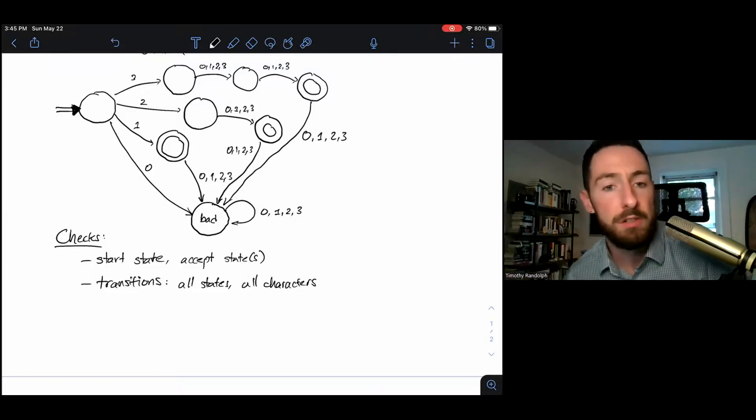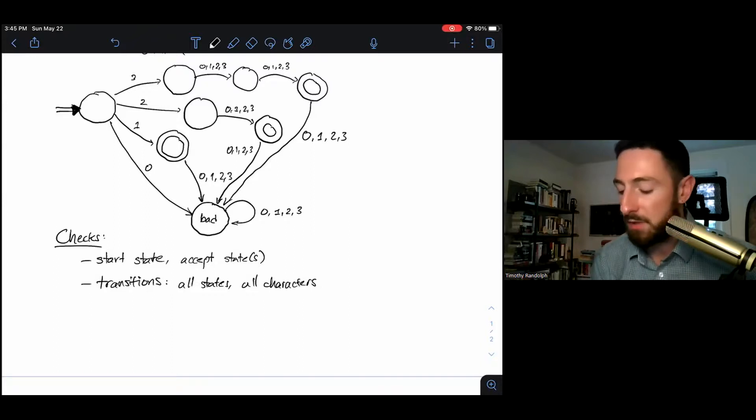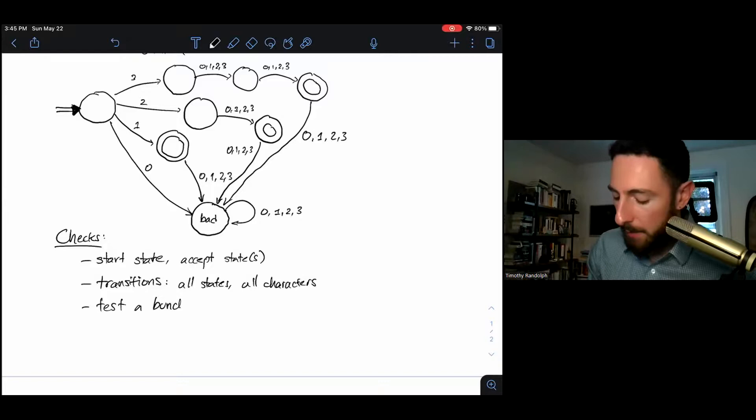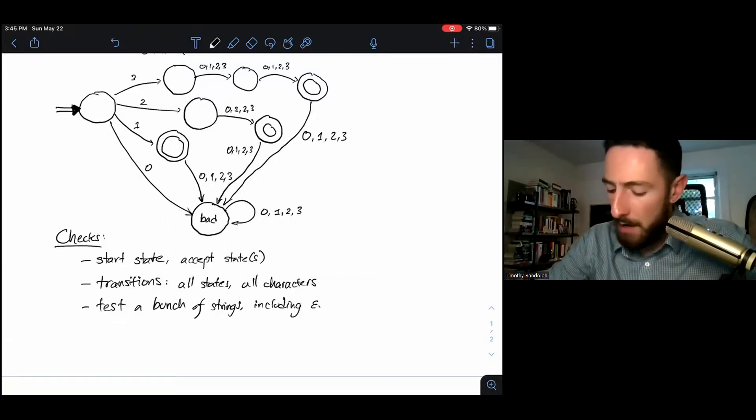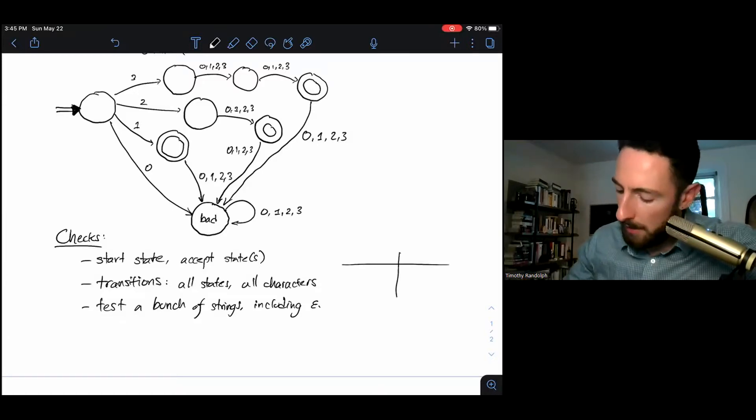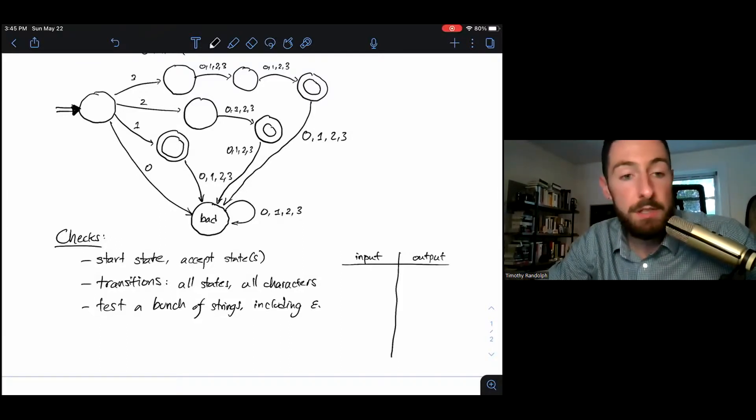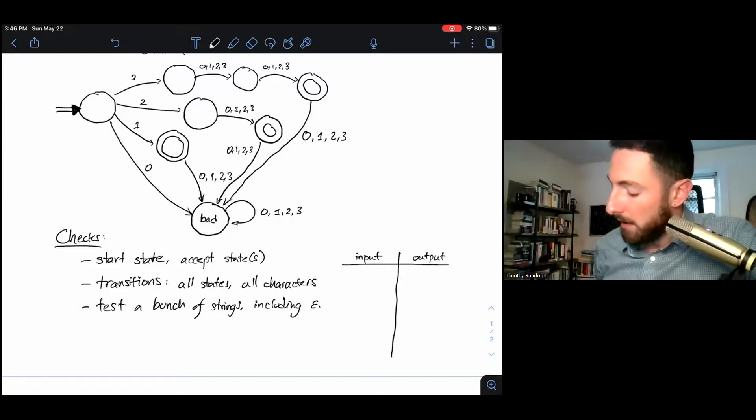It helps just to generally look over all your states. When I was rehearsing this video, I forgot the transition from the bad state to itself. So my DFA in that case would have been undefined for long strings that ended up in the bad state. So I've already caught one little error. And then finally, the third check that is always a good idea is test a bunch of strings, including the empty string, which is always a little special case that it's good to make sure your DFA works on. So I'm going to write down a bunch of inputs and check just by simulating my DFA that they lead to the output that I want.